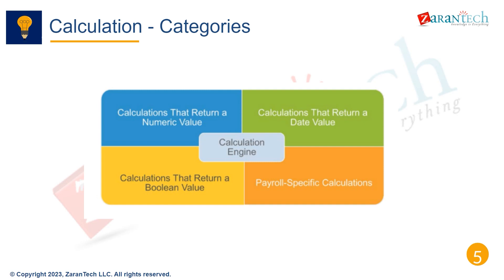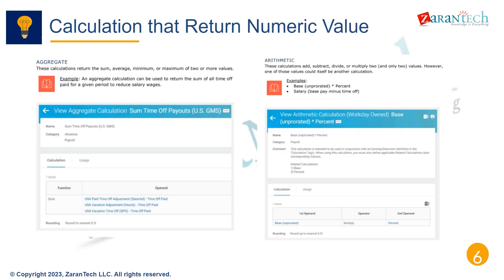There are a few main categories of calculations. First, calculations that return a numeric value, like an hourly wage rate, bonus amount, or deduction total — these are often used to determine earnings and deductions. Next, calculations that return a date value, like a hire date, review date, or job transfer date, which can be used in eligibility rules. Finally, boolean calculations return a true or false and are commonly used for eligibility to control whether someone qualifies for a certain earning or deduction.